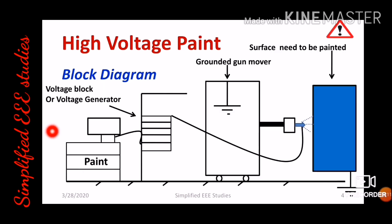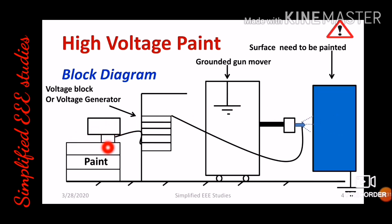Now let us discuss how the high voltage painting system operates. We can observe the block diagram here. The main intention is to paint the given surface. The blue colored one is the surface which needs to be painted — that is our target. On the extreme left side you can see the paint box. The paint part is directly connected to the high voltage block, or high voltage generator. The high voltage generator comprises a transformer plus a high voltage rectifier — that is a peculiarity of the high voltage generator.